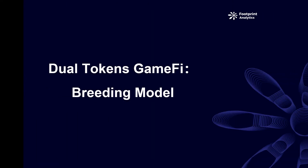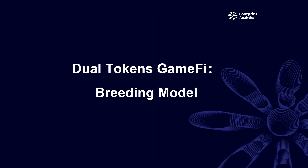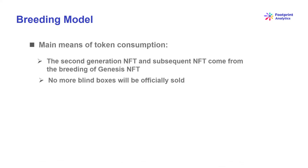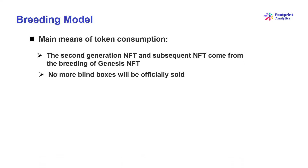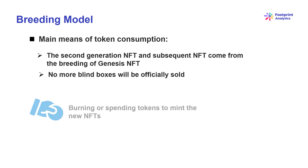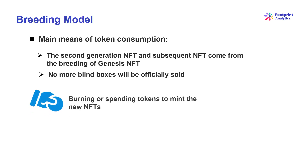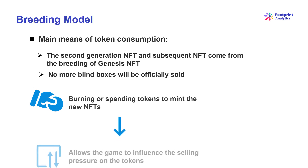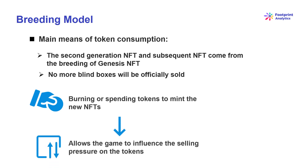The first model is the breeding model. In this model, second generation NFTs and subsequent NFTs come from the breeding of Genesis NFTs, with no more blind boxes sold. This mechanism requires burning or spending tokens to mint new NFTs, which allows the game to influence the selling pressure on the tokens depending on the price of minting.